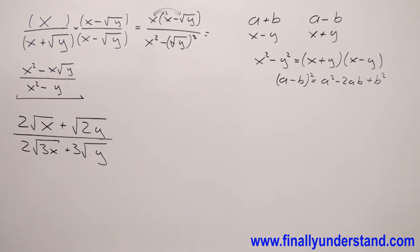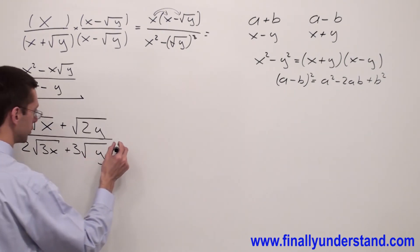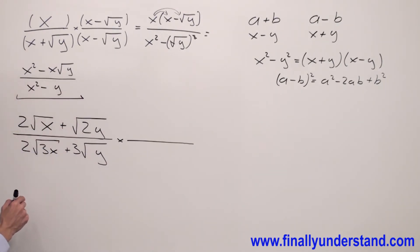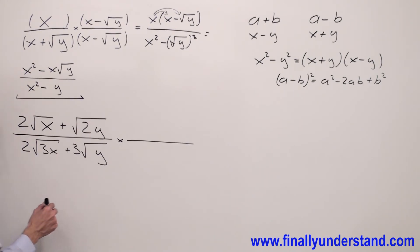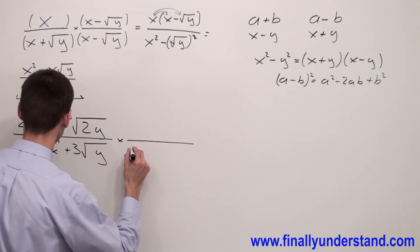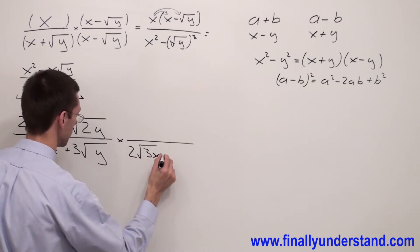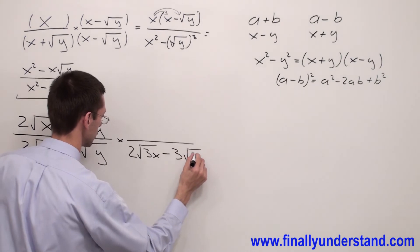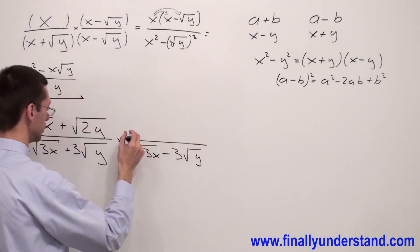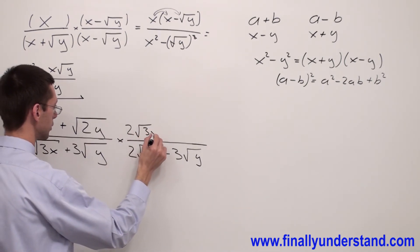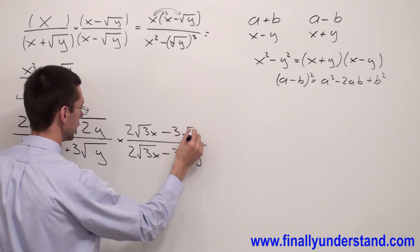Let's take a look at this example. We have to eliminate the square roots from the denominator. We have to multiply the numerator and denominator by the conjugate of the denominator in order to eliminate square roots. That's why I'm going to multiply by 2 square root of 3x minus 3 square root of y — the same thing written in the numerator.